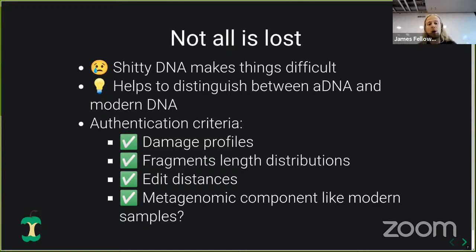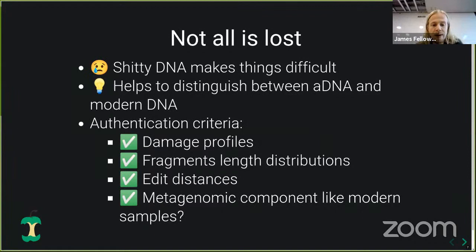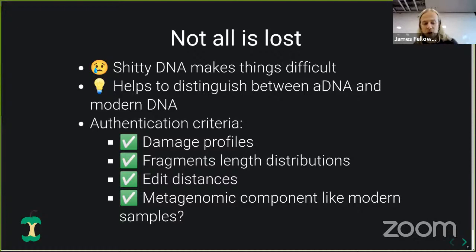While this damaged DNA does make things very difficult, it actually helps us to distinguish ancient DNA from modern DNA. A range of authentication criteria has been developed to help separate true ancient DNA from the organism you want to study versus everything else. These include damage profiles — the increased frequency of C-to-T substitutions at the ends of molecules — fragment length distributions, edit distances to check if you have a relative of your target species, and for microbiome work, checking whether the taxa found in your ancient sample look similar to what we know from modern samples — for example, gut taxa in ancient feces.